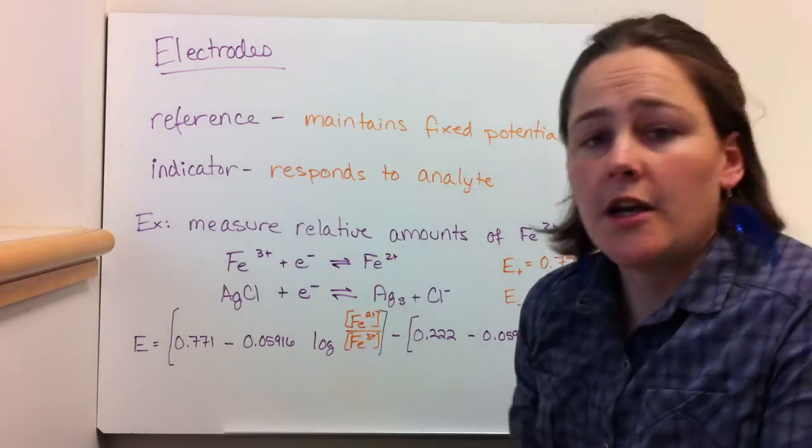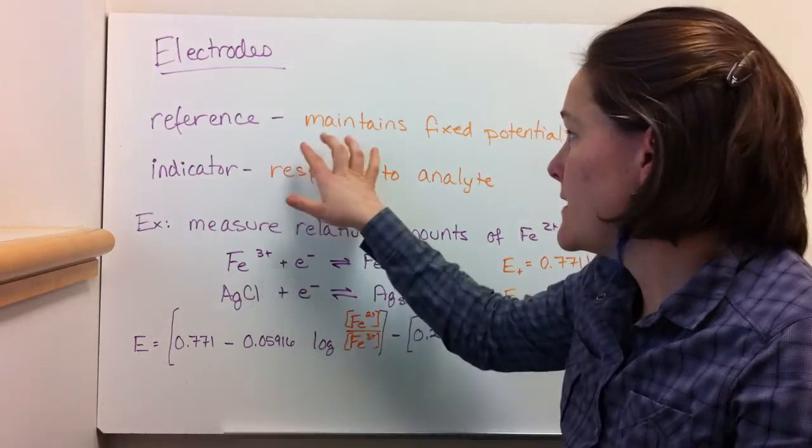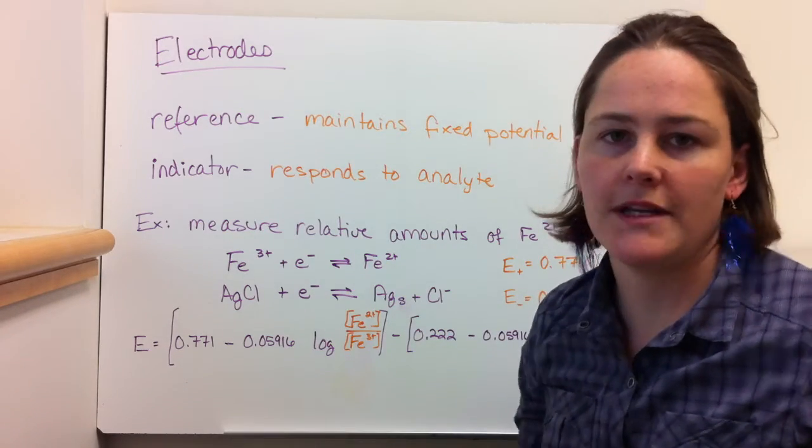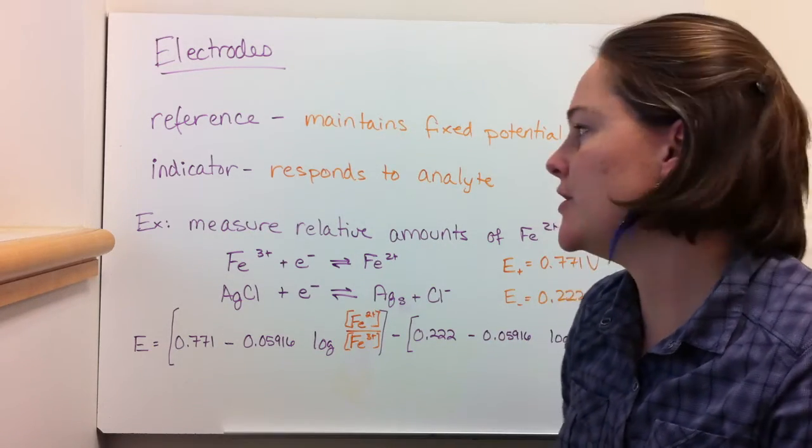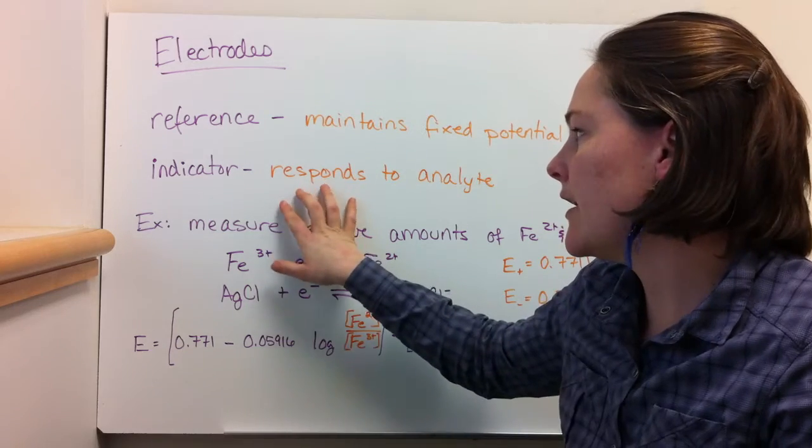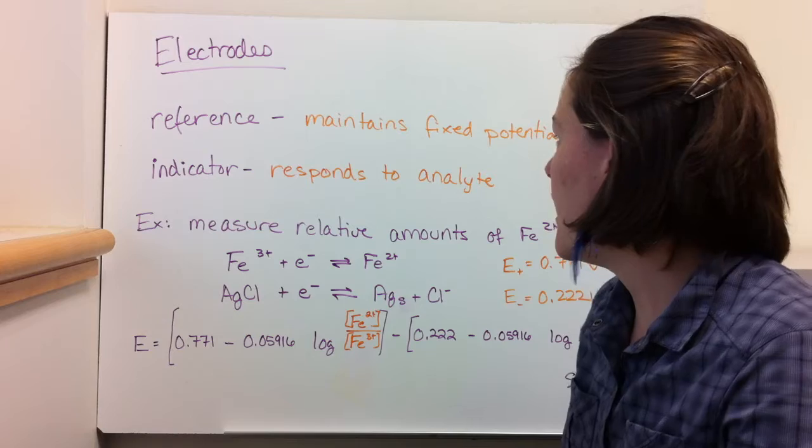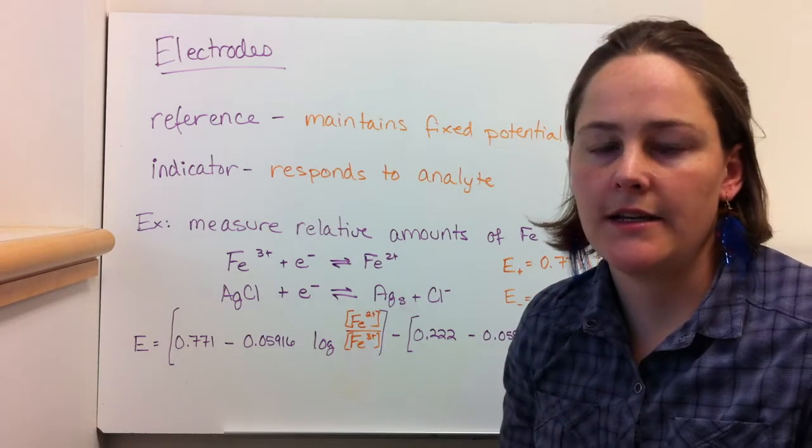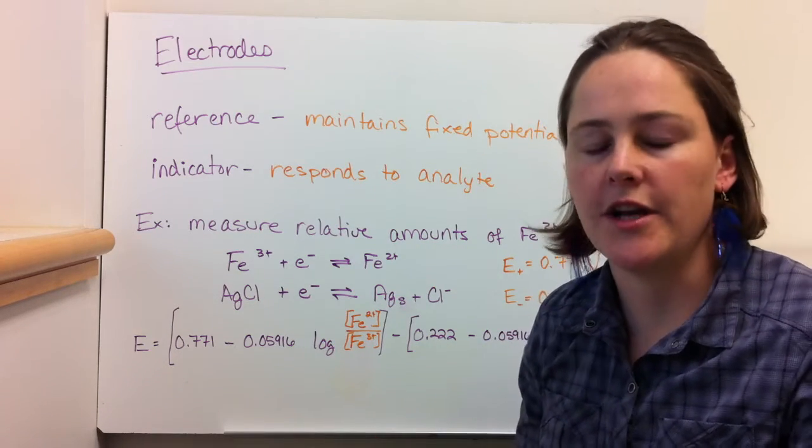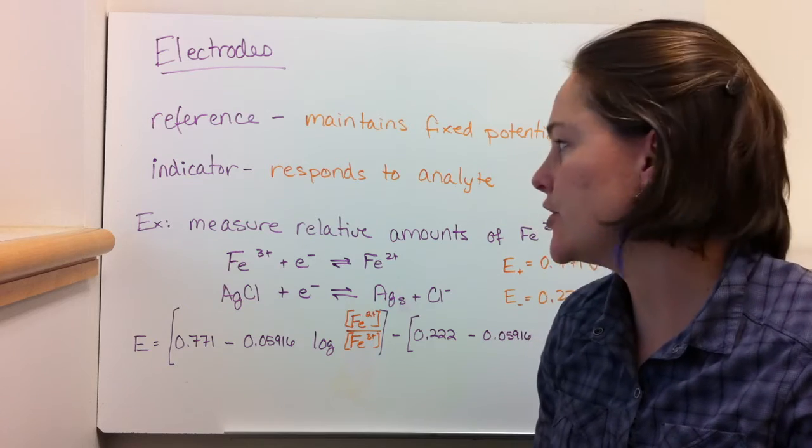First we're going to talk about some different kinds of electrodes. There's reference electrodes, which the whole idea is to maintain a fixed potential that you can measure an indicator electrode against. And an indicator electrode is something that's designed to respond to the change in analyte concentration in solution.